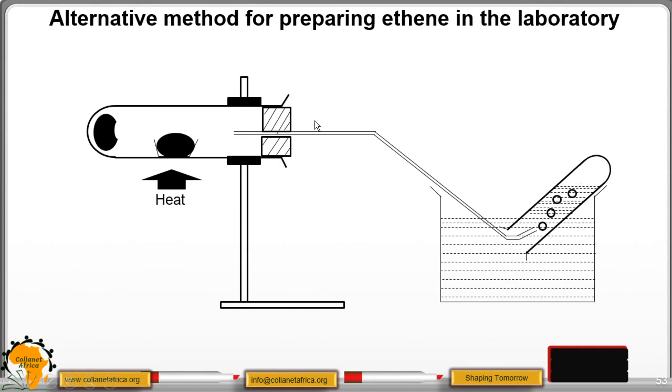This is the alternative method that you can utilize to prepare ethene gas in the lab. We have hard glass tube. We have our aluminum oxide. The aluminum oxide has two functions. It acts as a catalyst as well as a dehydrating agent because in this process, we are still dehydrating ethanol. We have our ethanol in a cotton wool. It is soaked in a cotton wool.